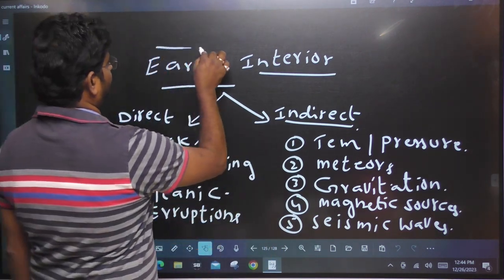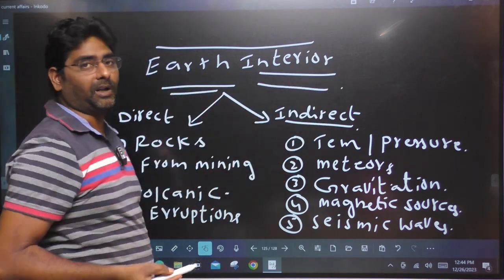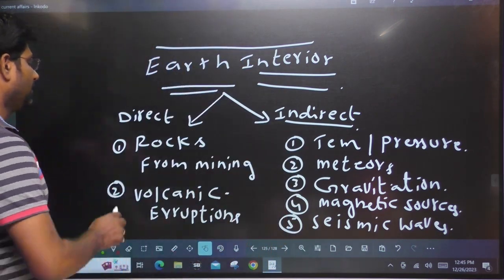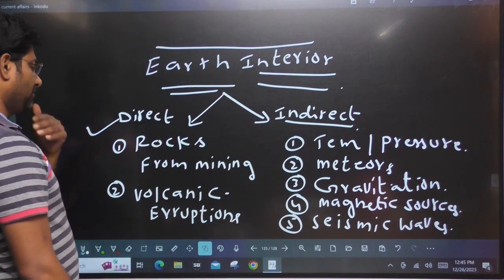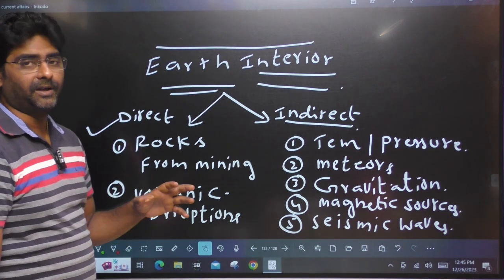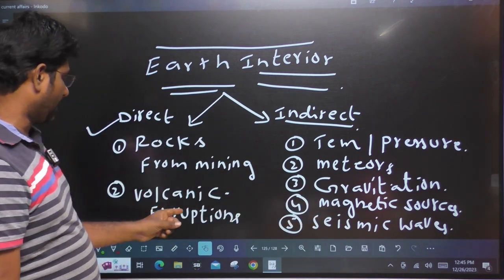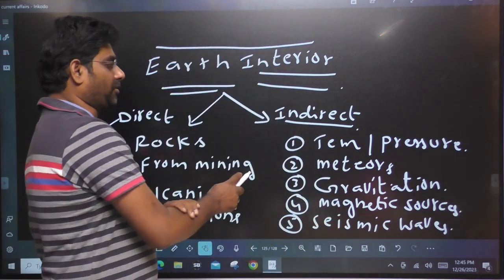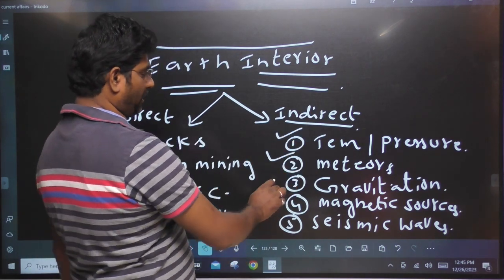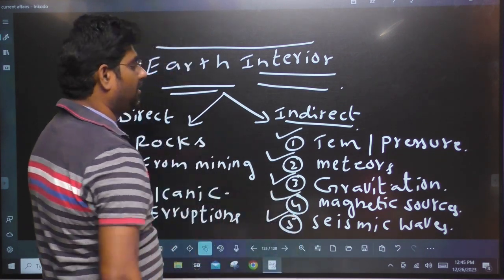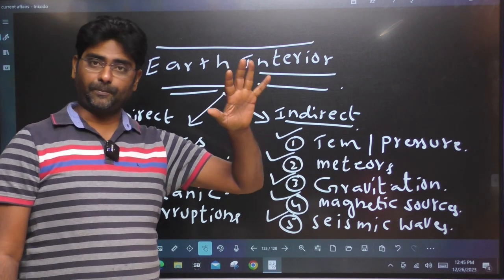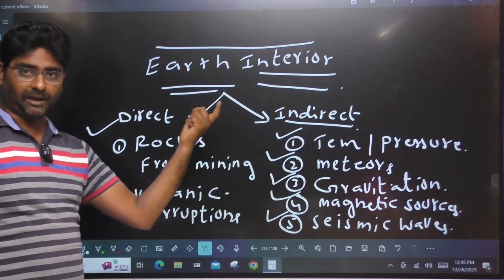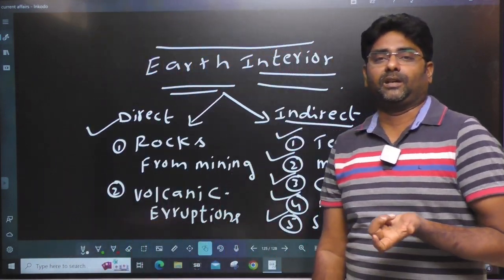Earth interior. We don't have any kind of work except direct sources and indirect sources. What are direct sources? Rock from mining — if we are doing rock from mining, then we have to fix the temperature. Along with the volcano, we have to understand what we have in the interior of the world. Indirect sources include temperature and pressure variation, meteor, gravitation force, and magnetic sources.